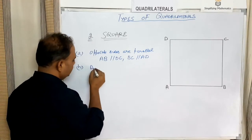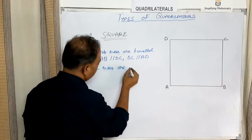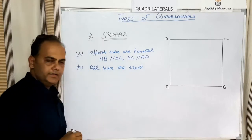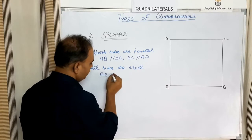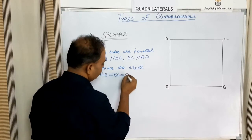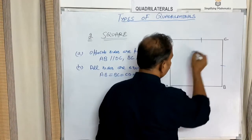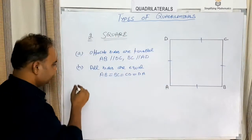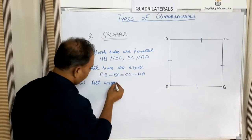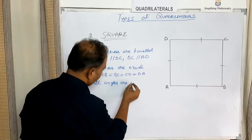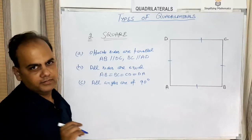The second property of a square is that all sides are equal — AB equals BC equals CD equals DA. The third property is that all angles of a square are 90 degrees.